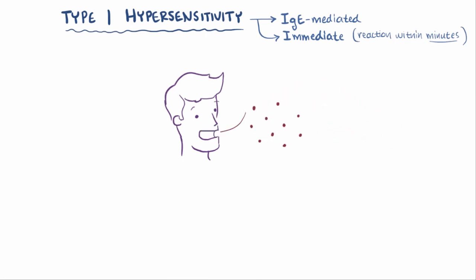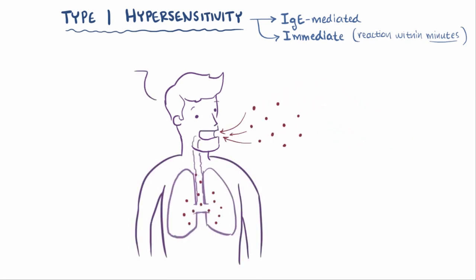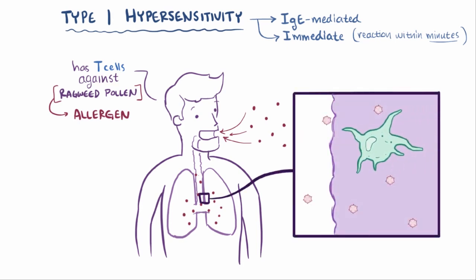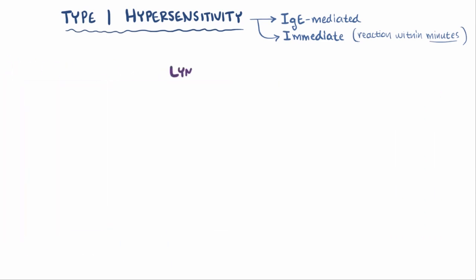Let's say this person breathes in some ragweed pollen. That person happens to have T helper cells that can bind to a specific molecule on the pollen, making that molecule an allergen. First, that allergen gets picked up by immune cells hanging out in the membranes along the airways, which then grab the molecule and migrate to the lymph nodes, which happens regardless of if the person is allergic or not.